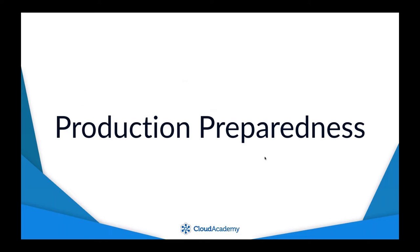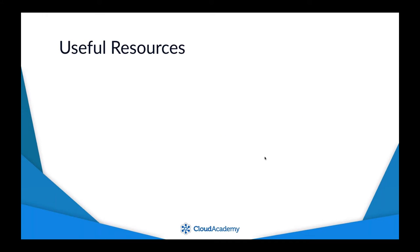We'll start with production preparedness, covering two aspects: features in Kubernetes you may not have heard about, and practices you should apply when committing to production. First up are what I call useful resources — things you may not use in a development or evaluation phase, but will definitely use when building a real-world application.